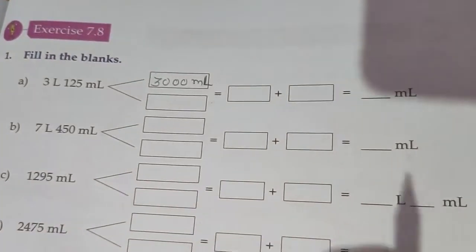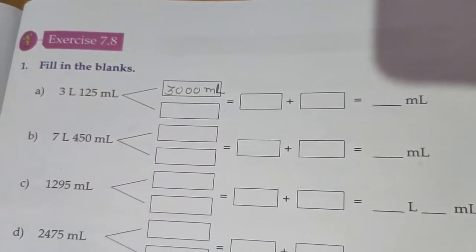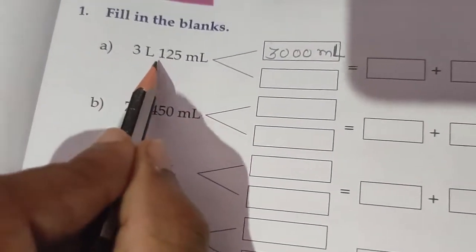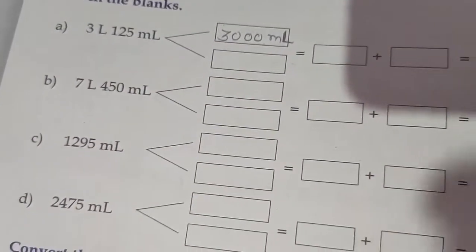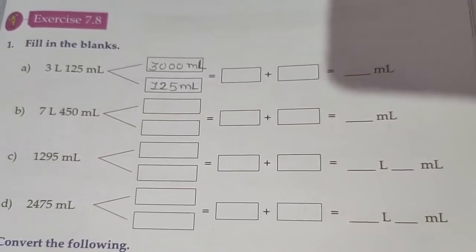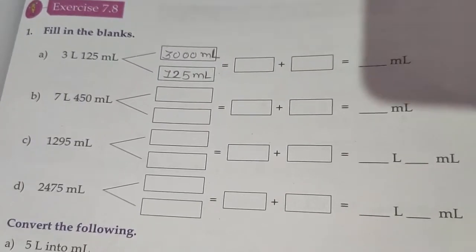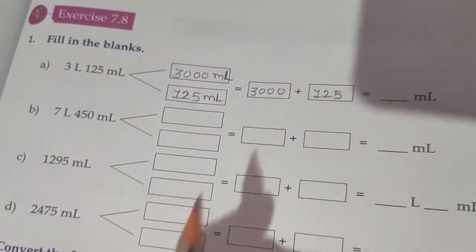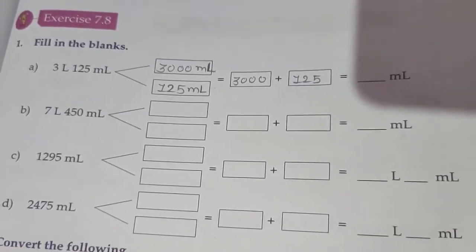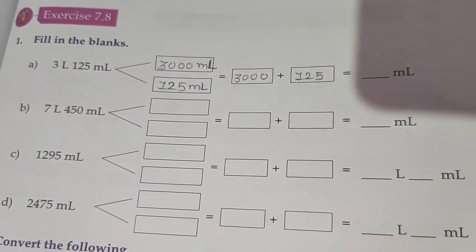So now we have to add: 3000 ml plus 125 ml. We add these two together, so our answer is 3125 ml.